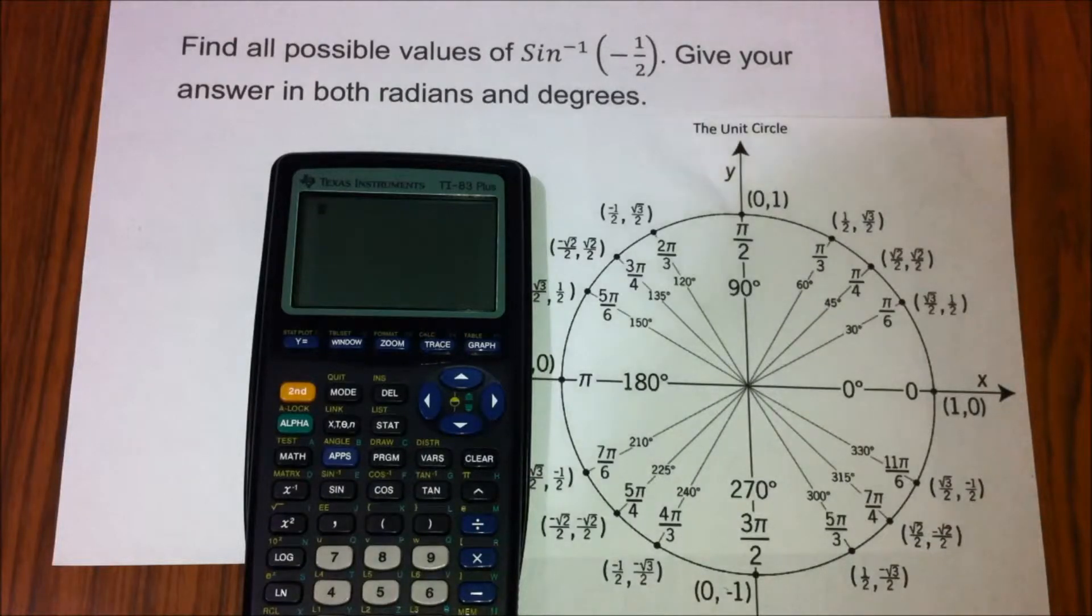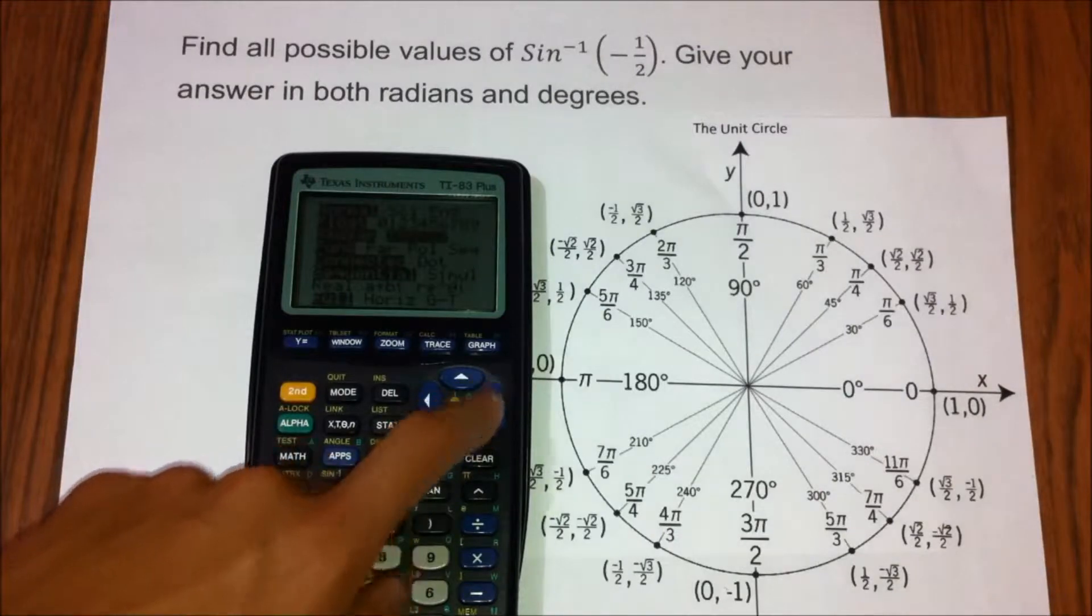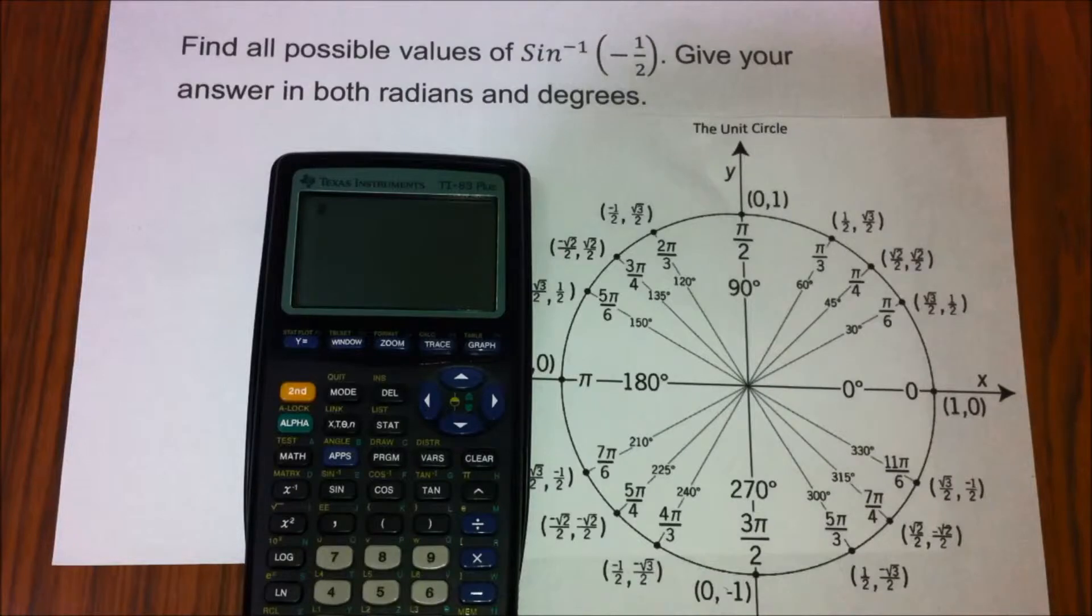In the calculator, we must check if it calculates in terms of degrees by pressing the mode button and switch from radians to degrees. So go here, go down, press degree and press clear. After you press clear,